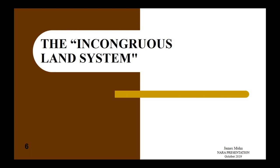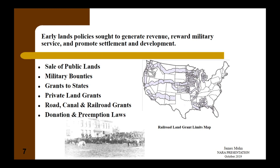When the Homestead Act was passed in 1862, there were already many laws enacted by Congress. Early land policies sought to generate revenue, reward military service, and promote settlement and development. Lands were sold at auction. Military bounties were given to soldiers who had served in wars like the Revolution, the War of 1812, and the Mexican War. Lands were granted to states, and private land grants were recognized for titles given by previous sovereigns. Road, canal, and railroad grants were issued, and donation and preemption laws allowed individual settlers to take up lands.